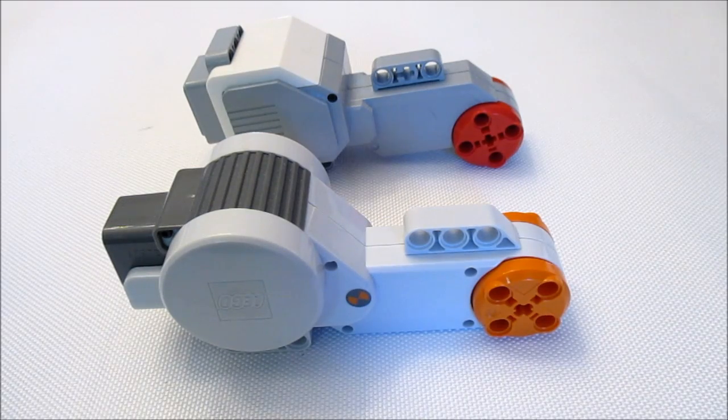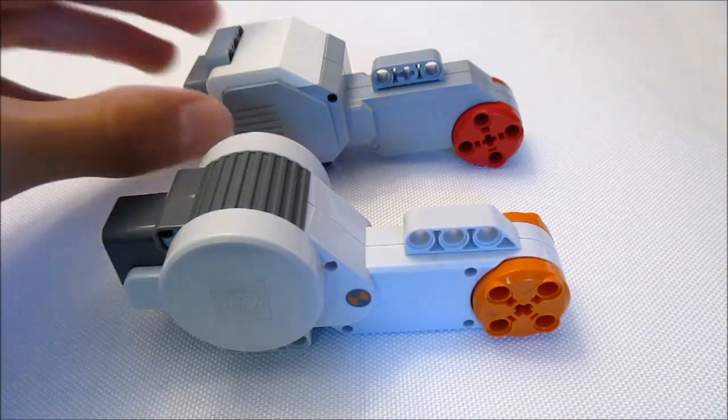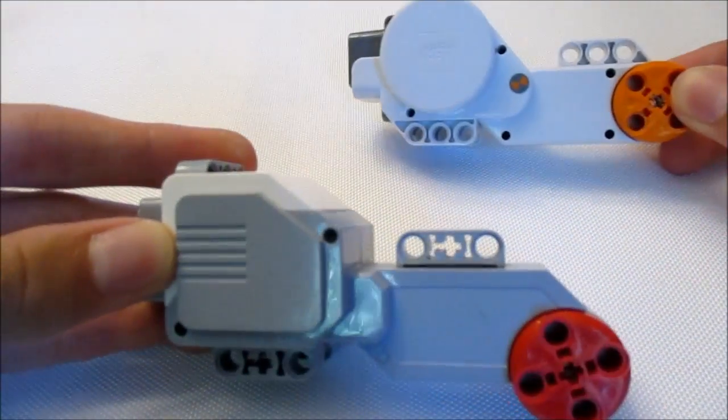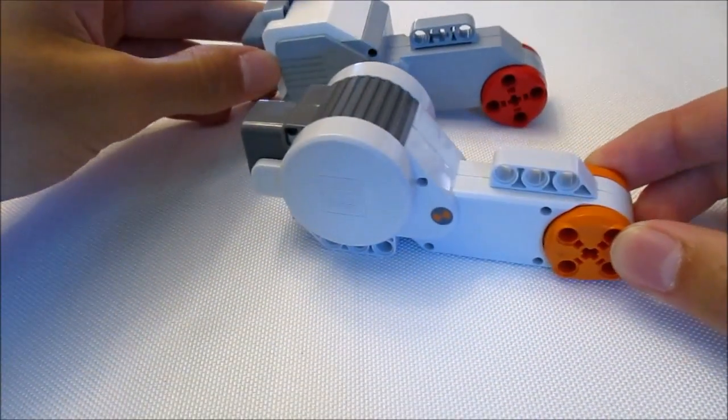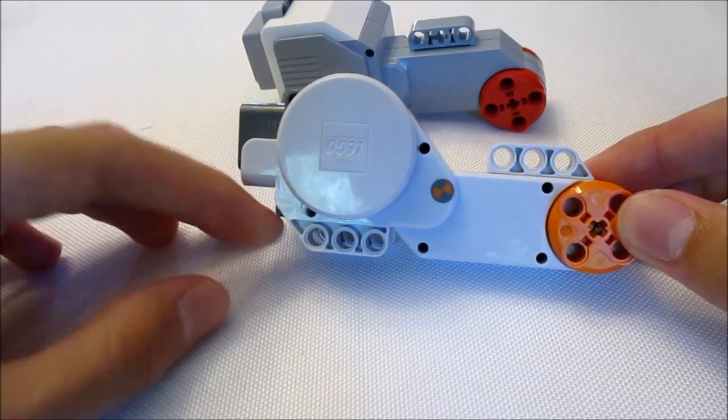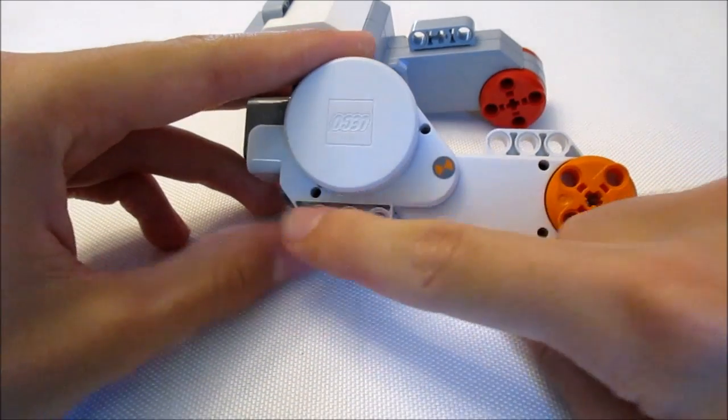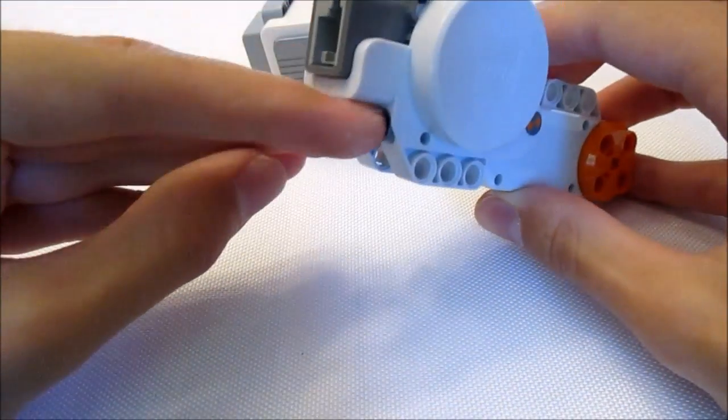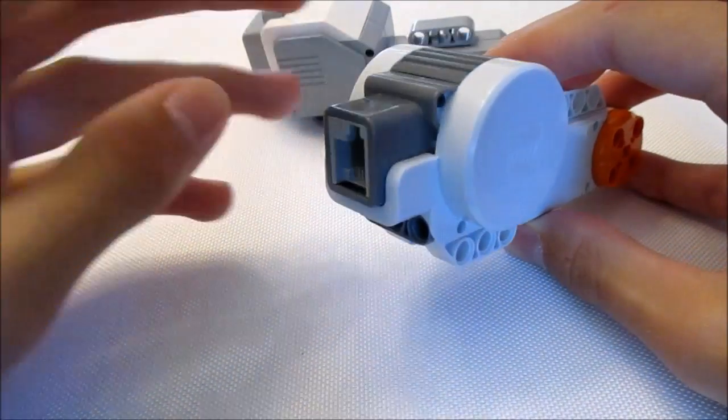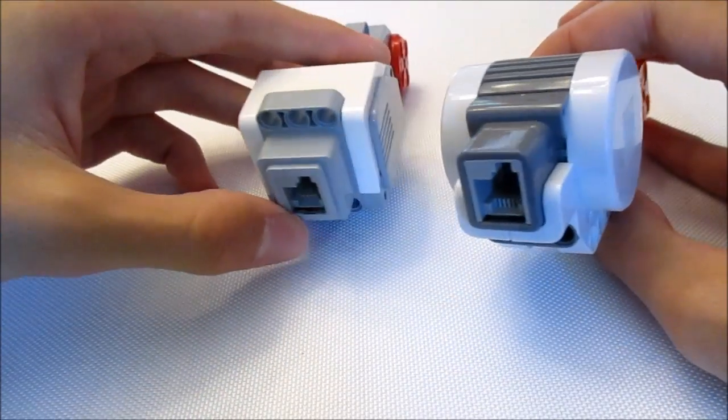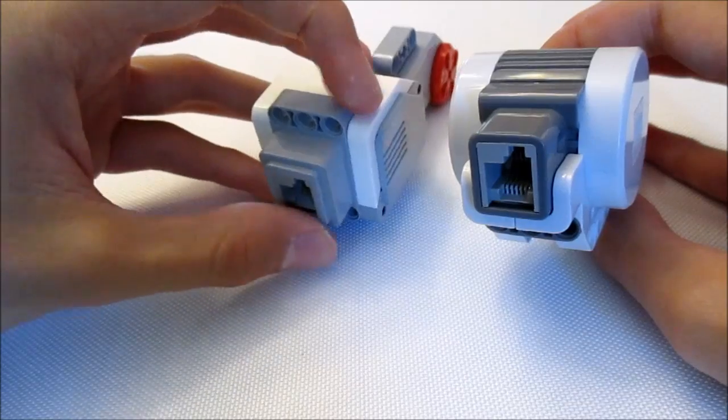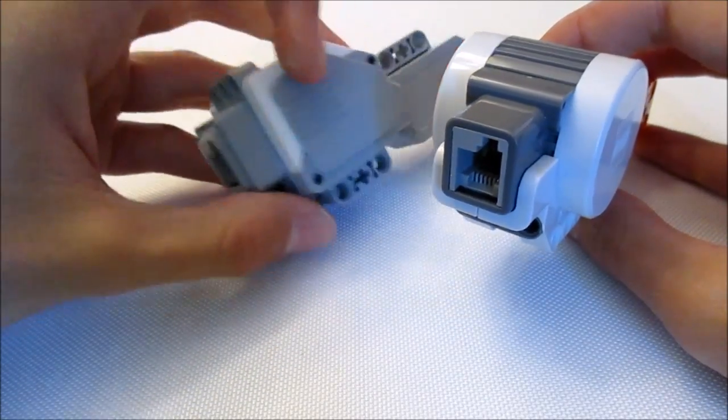So first I'll discuss the exterior features of these motors. As I mentioned before, they look pretty similar on first glance. What you'll notice is that the NXT motor has three mounting holes here on either side, three mounting holes underneath the electrical port, but nothing on top. Whereas the EV3 motor does have three mounting holes on top, and that makes it a little more versatile for mounting in the back.